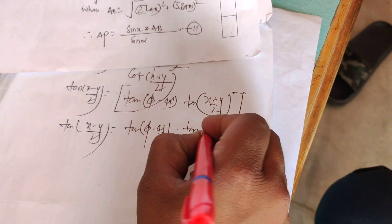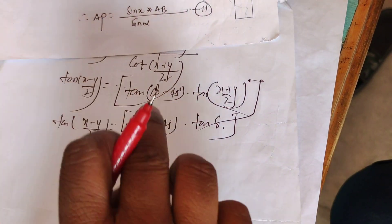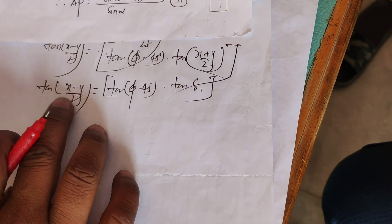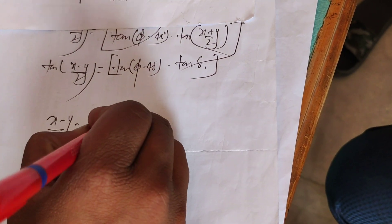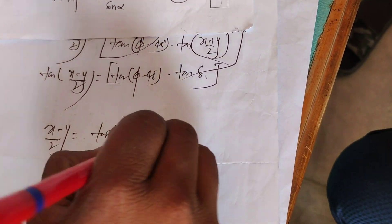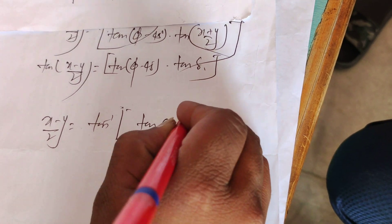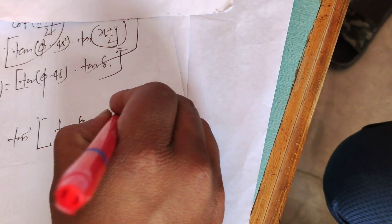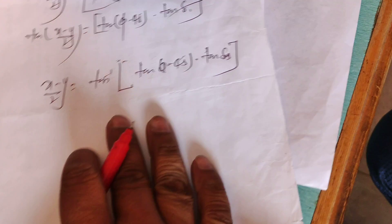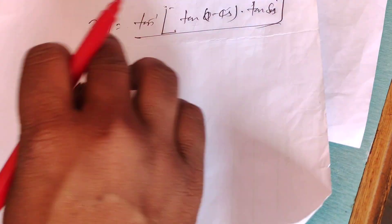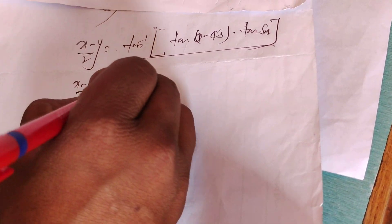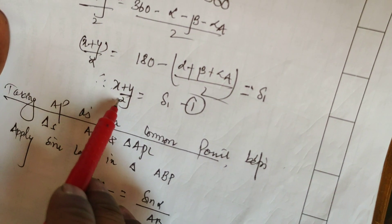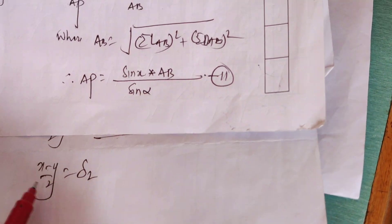Into tan(delta 1). Then, x minus y divided by 2 is equal to tan inverse of [tan(phi minus 45) times tan(delta 1)], which equals delta 1. What about the sin?